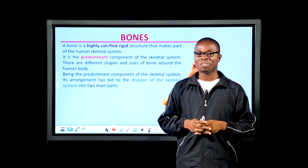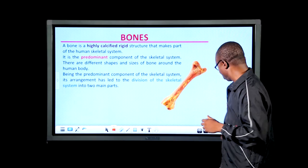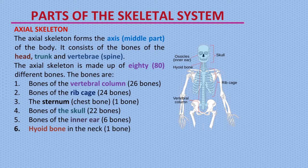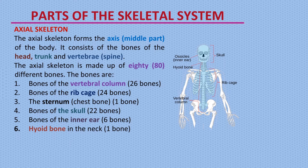The human skeletal system is divided into two main parts: the axial skeleton and the appendicular skeleton. The axial skeleton is made up of bones which form the axis of the body — by axis we mean the middle section of the body. The axial skeleton consists of the bones of the head, trunk, and the vertebrae, and is made up of 80 different bones.